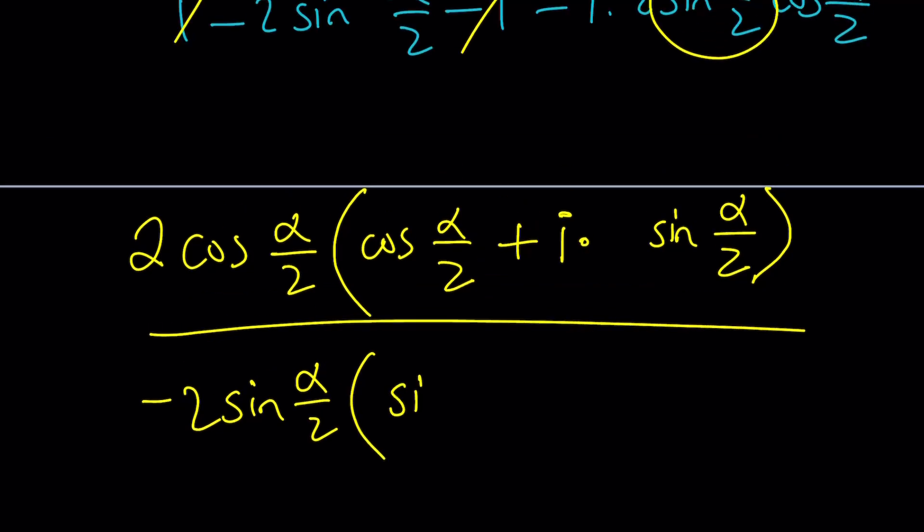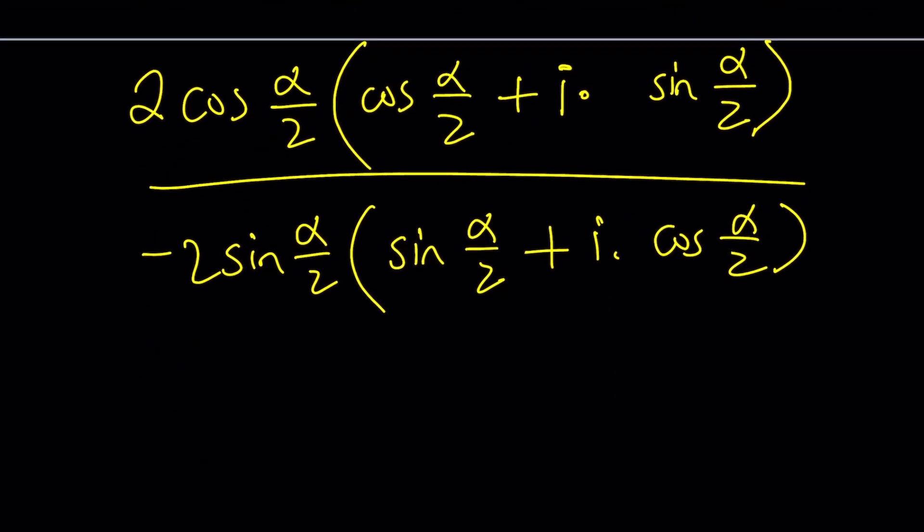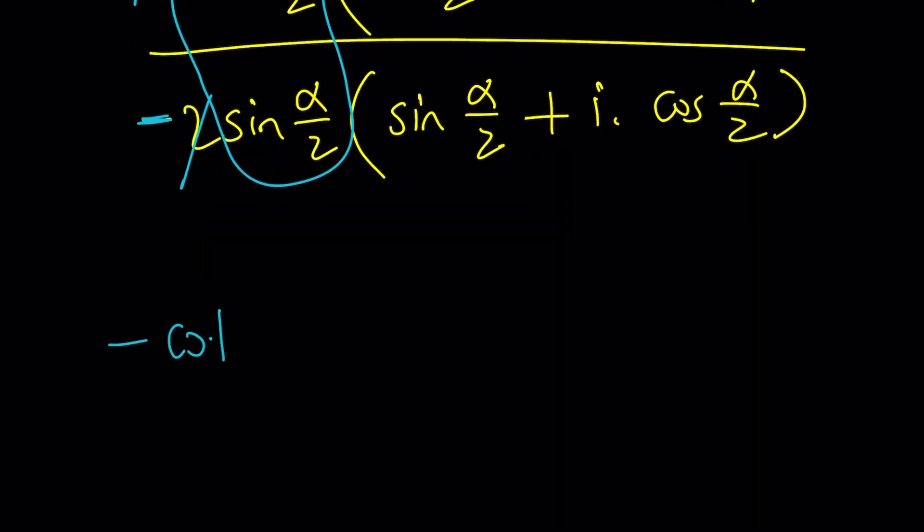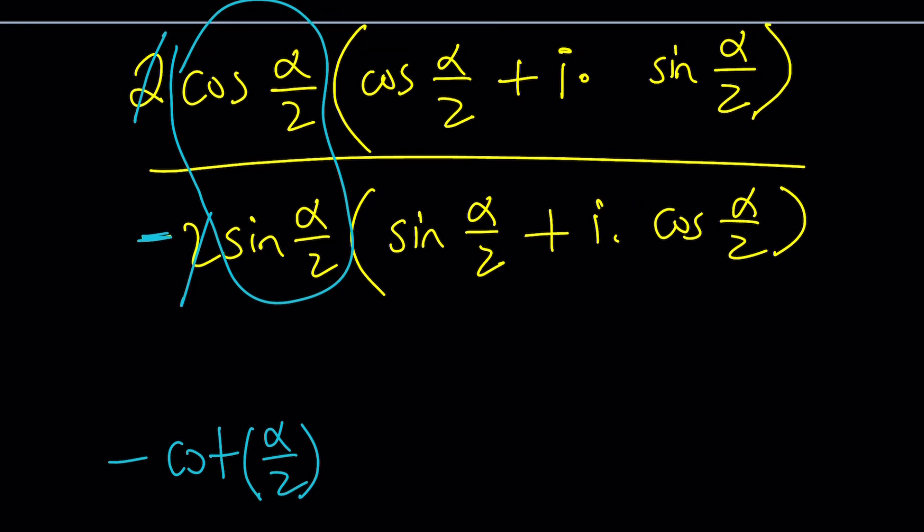But this time, we have a plus 1 here, we have a minus 1 here. We need to use a different formula, and it's going to be 1 minus 2 sine squared alpha over 2. If you try the other one, you're going to realize it's not going to work. But the sine is going to stay the same. And then we're going to simplify this. One cancels out. Notice that cosine alpha over 2 is a common factor in the numerator, and sine alpha over 2 is a common factor.